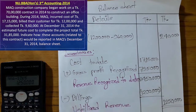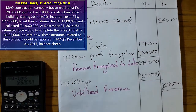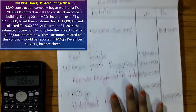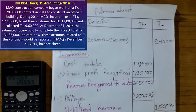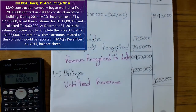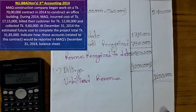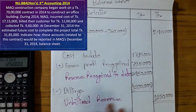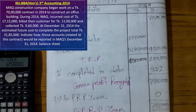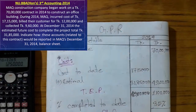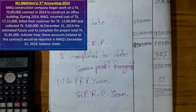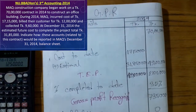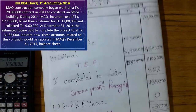Now we complete today's column work. In today's question, even though gross profit recognized was not asked separately, for the balance sheet we need gross profit recognized. So we must compute it regardless.